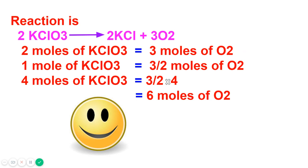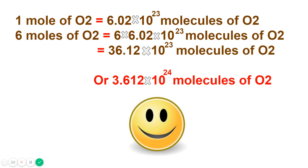The reaction is 2KClO₃ → 2KCl + 3O₂. Using unitary method: 2 moles of KClO₃ produce 3 moles of O₂, so 4 moles of KClO₃ produce 4 × (3/2) = 6 moles of O₂. To find the number of molecules: 1 mole contains 6.02 × 10²³ molecules (Avogadro's number). For 6 moles: 6 × 6.02 × 10²³ = 36.12 × 10²³, which in scientific notation is 3.612 × 10²⁴ molecules of oxygen.